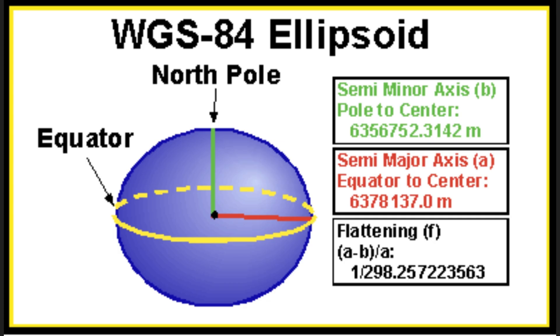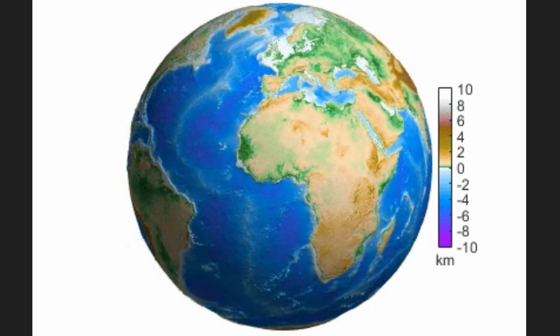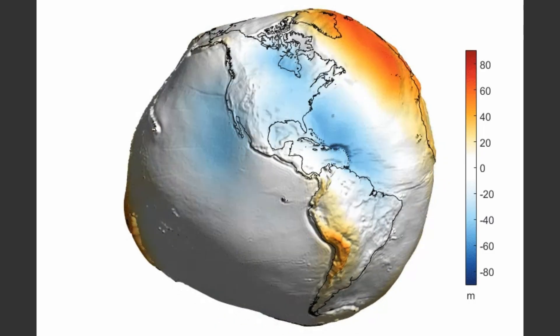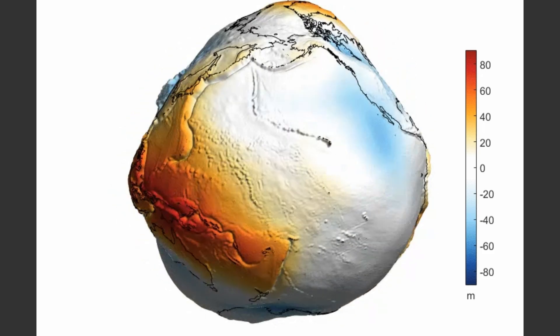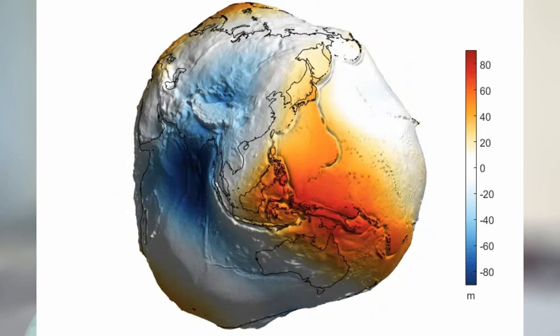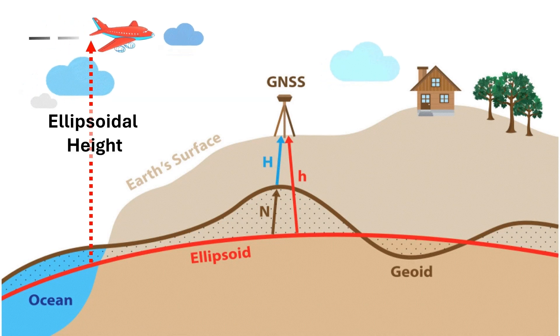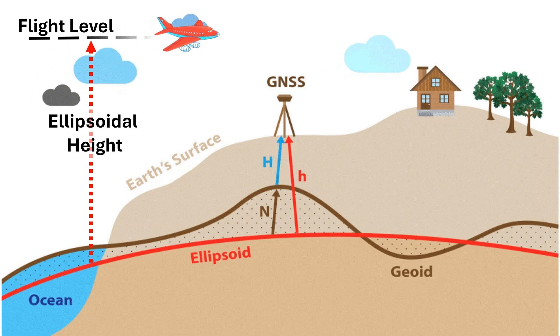A GNSS system uses a mathematical model of Earth's surface. In one model, we define Earth as an ellipse with a polar axis and an equatorial axis, and all height is considered from this ellipse — this is called ellipsoidal height. In another model, we use Earth's gravity to define the mathematical model of the Earth's surface. This model is called the geoid, and the height measured from the geoid is called orthometric height. Geoidal height is the height difference between the ellipsoidal plane and the geoidal plane.